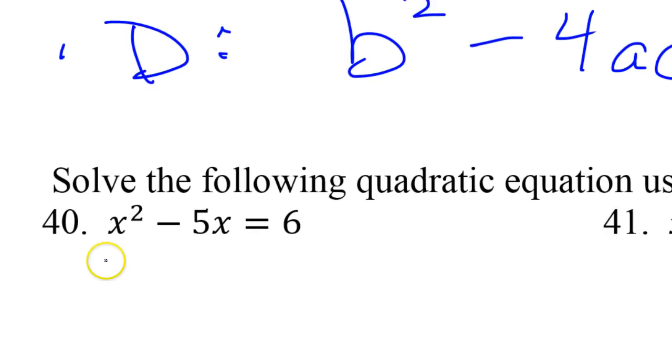So I'm doing this b squared minus 4ac. For this problem, first of all, I need to move the 6 over. I need a 0 over here. So your first step should be to subtract that 6 from both sides. That's going to give you x squared minus 5x minus 6 equals 0.